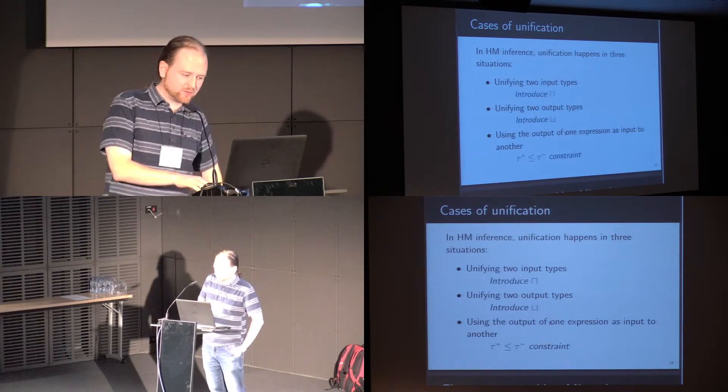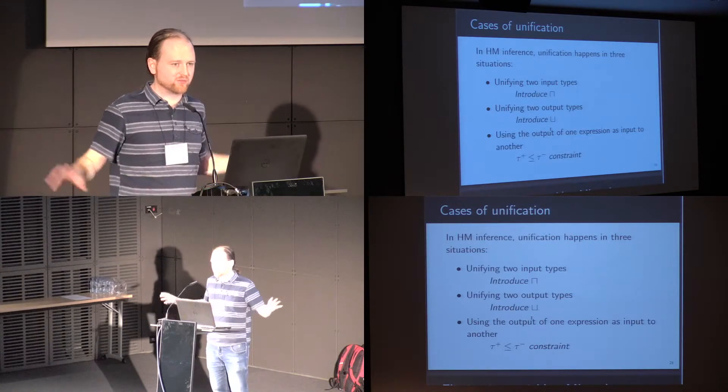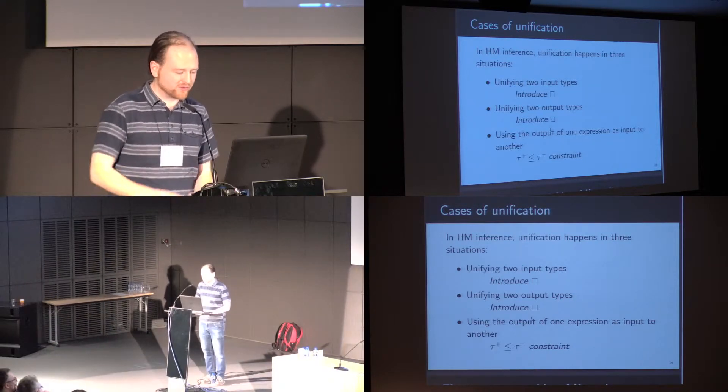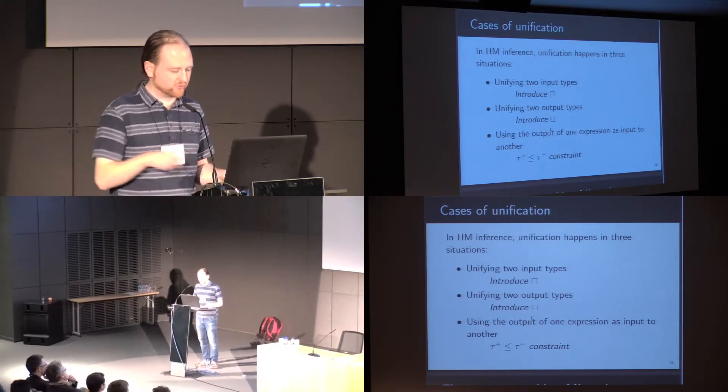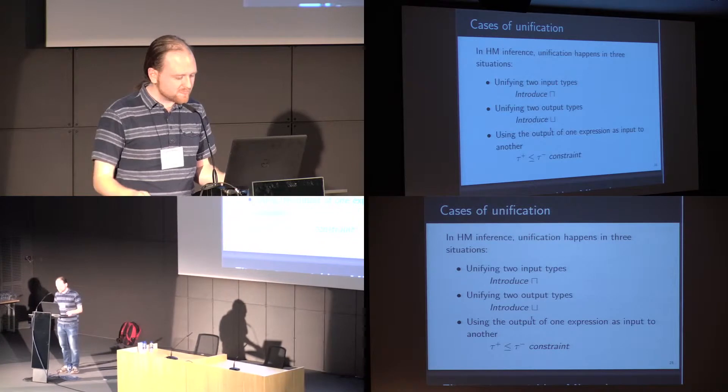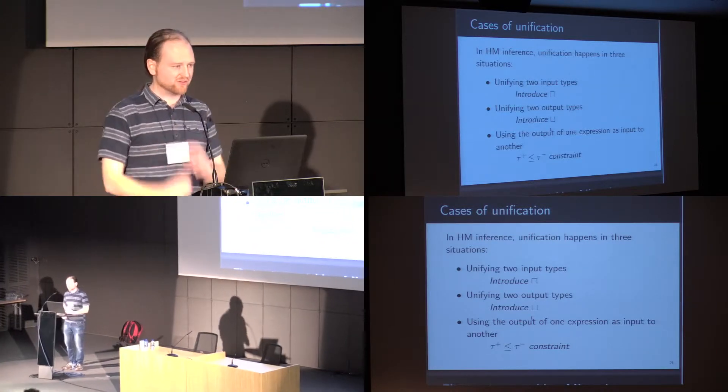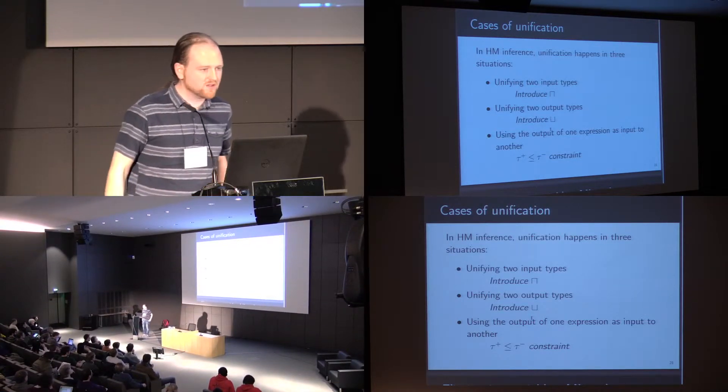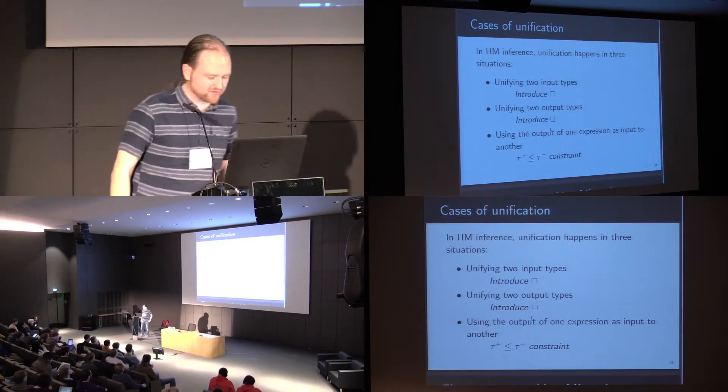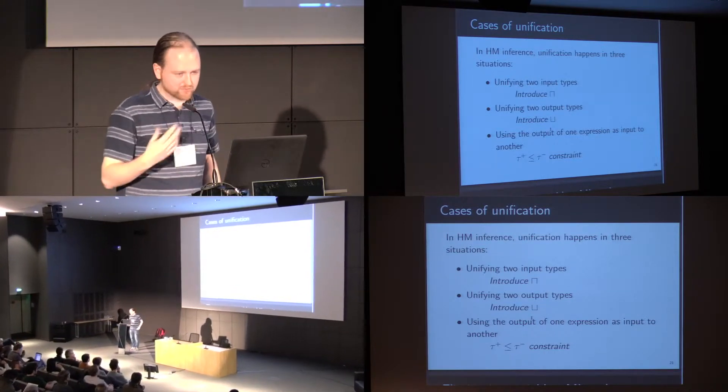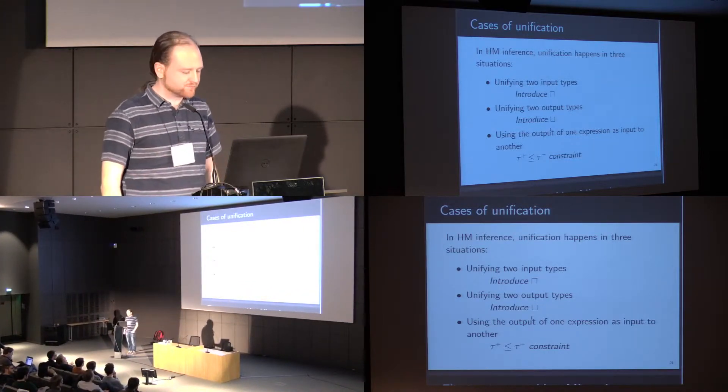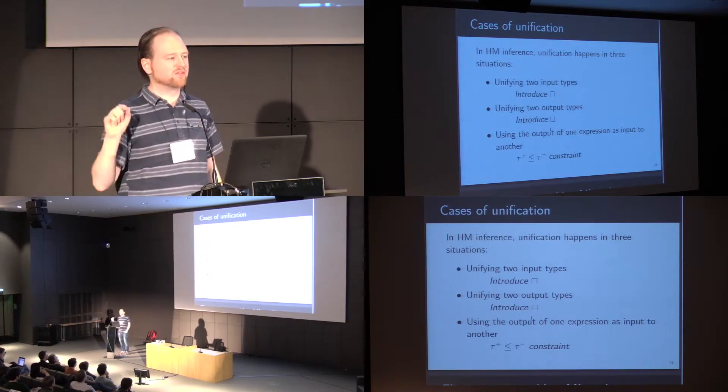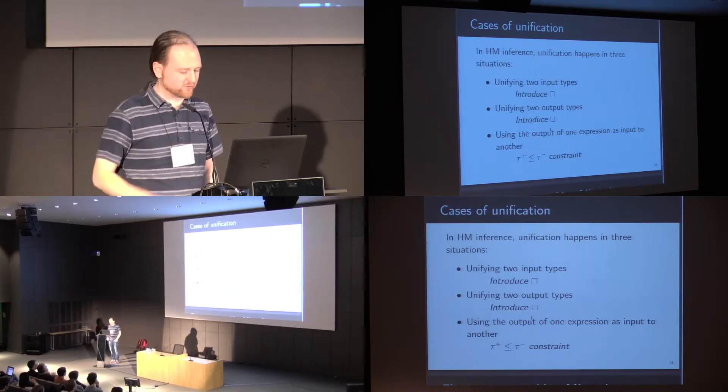So in ML-sub, unifying two input types, we never need to touch the types. That's just introducing a meet. It must be both of these things. Unifying two output types, we just introduce a join, an upper bound. The only constraints that we must solve are when we're trying to feed the output of one expression into the input of another. So the only difficult case in unification, or in our equivalent of unification, will be when we're trying to feed a positive type and we're trying to show that it's a subtype of a negative type that's required in some other part of the program.